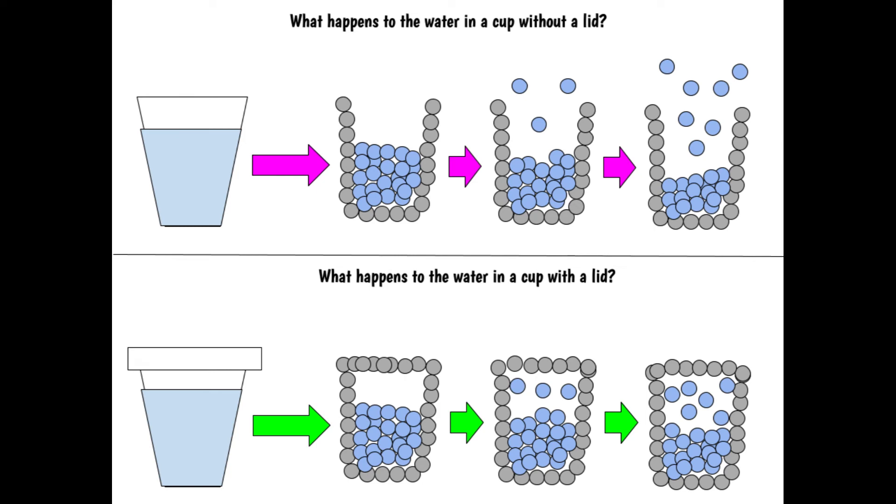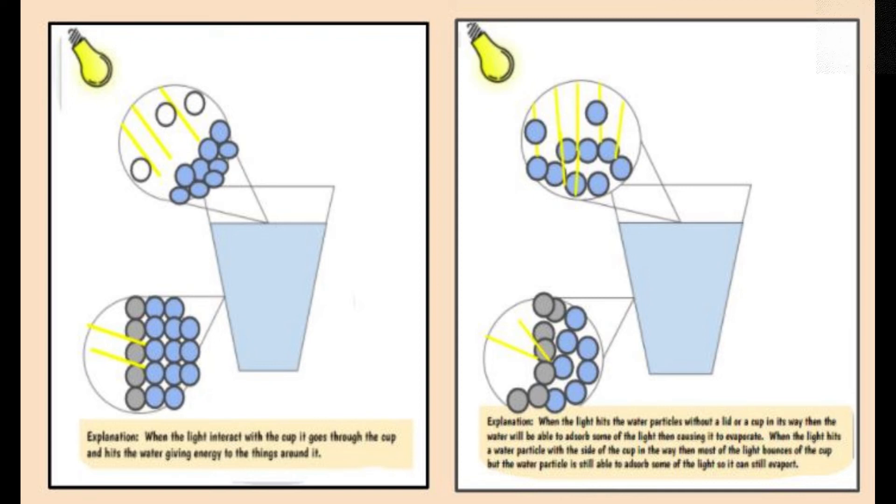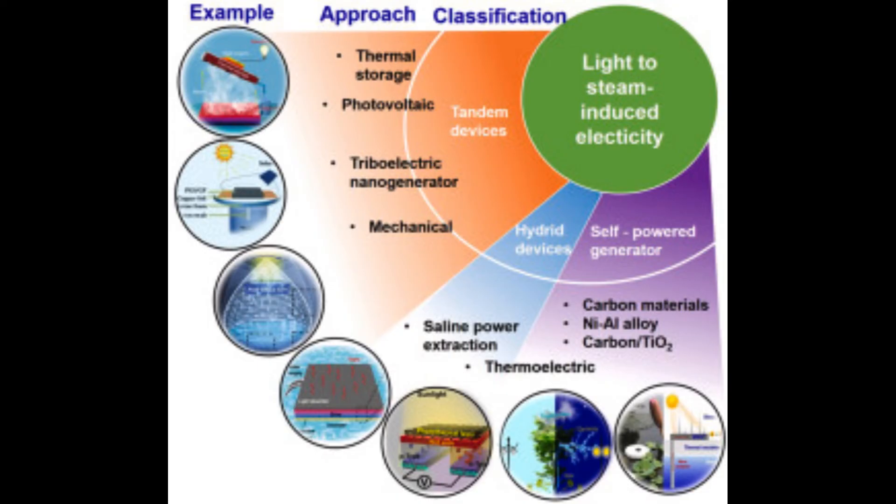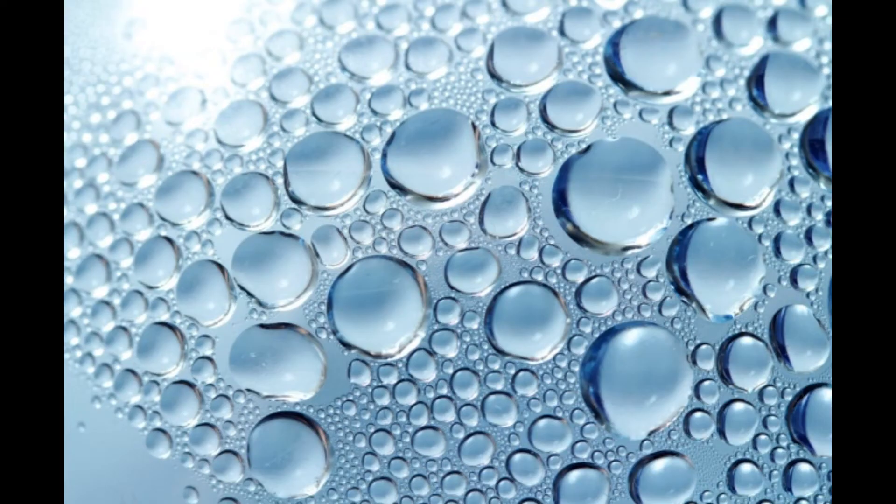Efforts were made by the researchers to replicate the observed rate of evaporation. They utilised the same set-up, but instead of light, they heated the material with electricity. Despite having the same thermal input as the initial test, the amount of water that evaporated did not exceed the thermal limit. The outcome was different when simulated sunlight was introduced, as it validated that the extra evaporation was caused by light.